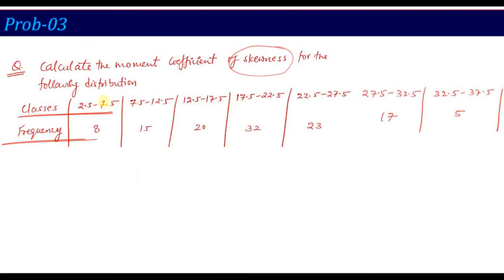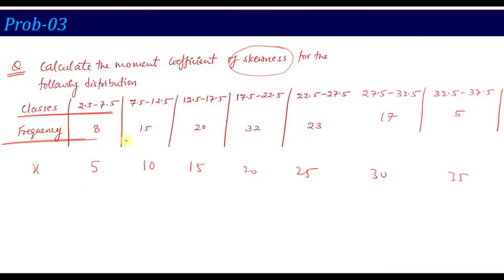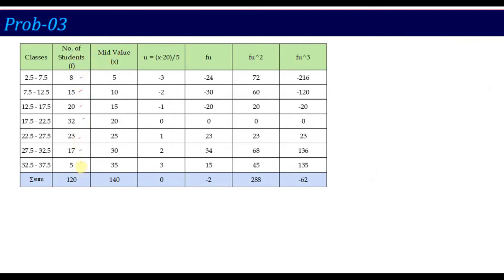To calculate moments from a data series, first find the mid values. If the range gives mid values 5, 10, 15, 20, 25, 30, 35 — these become our x values, arranged in tabular form alongside frequencies 18, 8, 15, 20, 32, and so on. Since the x values are larger, we use the change of scale method: u = (x - a) / h, where a is the assumed mean. With 7 mid values (odd count), the assumed mean is the middle value, which is 20, and the class interval h = 5.